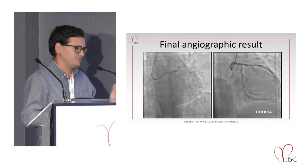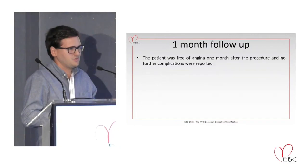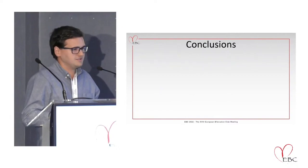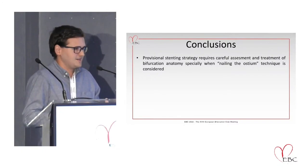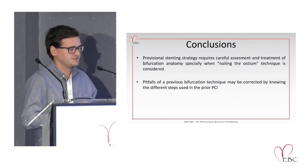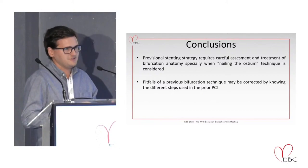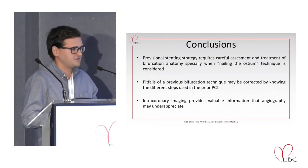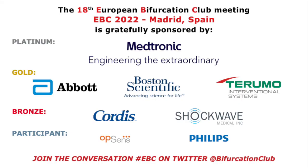The final angiographic result was excellent. DFR improved clearly to 0.95. At one-month follow-up the patient was free of angina and feeling well with no further complications. To conclude: provisional stent strategy requires careful, meticulous assessment and treatment of bifurcation anatomy, especially when the nailing-the-ostium technique is considered. Pitfalls of previous bifurcation techniques may be corrected by knowing the different steps and using prior PCI images. Intracoronary imaging provides valuable incremental information that angiography may underappreciate.